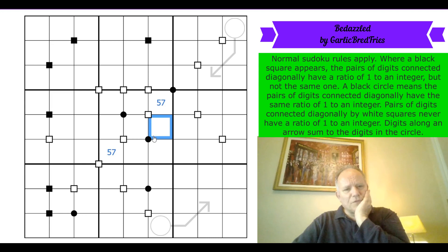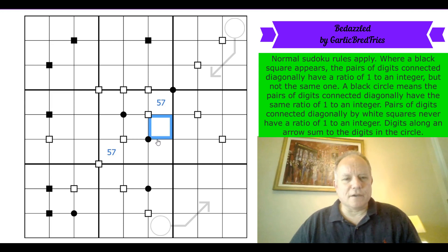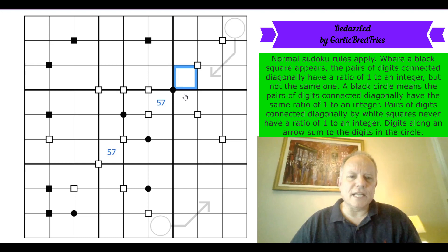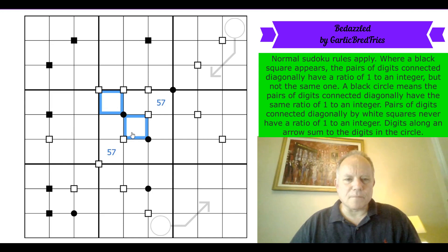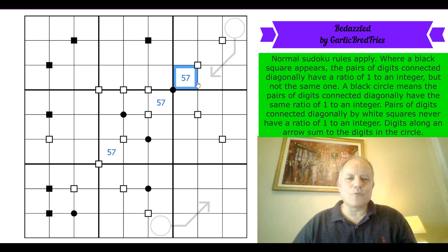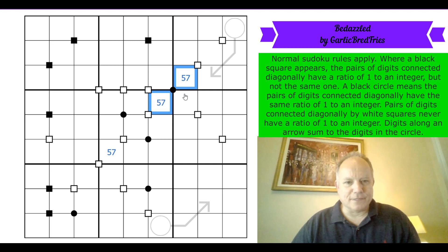Oh, I do understand it now, and that is brilliant! The ratio I had not considered is one-to-one. This black circle is different — if you put a two and a four in those cells you can have the same digits there, because the ratio of one to an integer includes one-to-one. Oh my goodness, Garlic Bread Fries has absolutely slapped me in the face at the start of this puzzle!